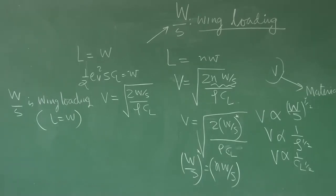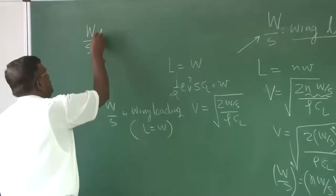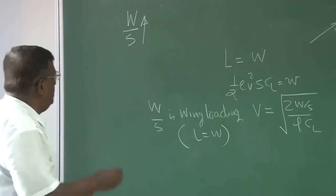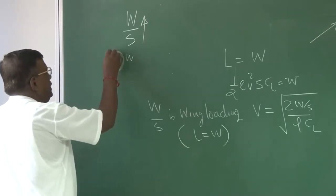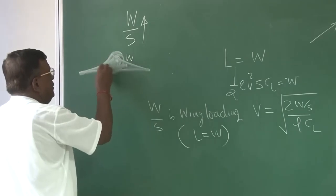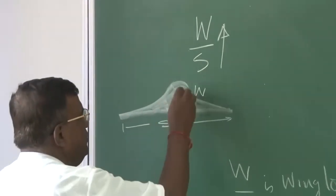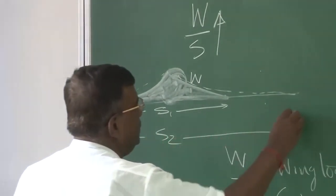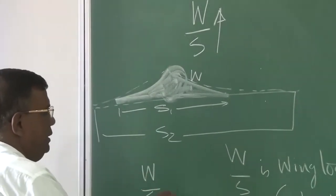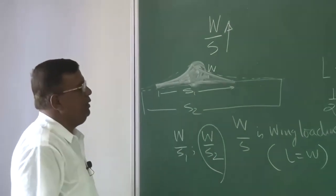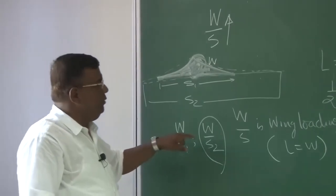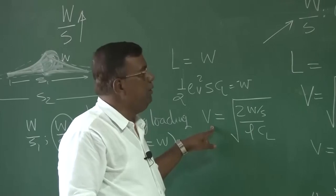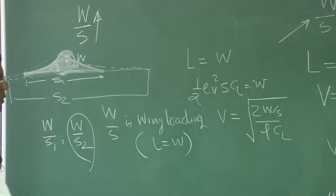If I go on increasing wing loading, that means I am relatively reducing the wing area. For example, if I have a weight W with area S1 in the first case, and in the second case the same weight but a larger flattened area S2, then W/S2 is less than W/S1. The moment wing loading is less for the second case, you could see that the speed required to maintain level flight is also less. Wing loading plays an important role in deciding the speed for a given CL.